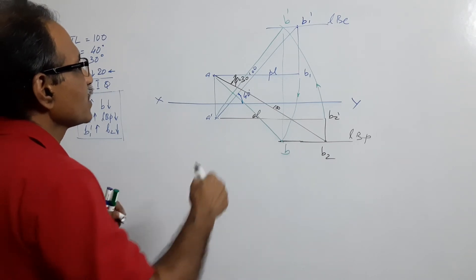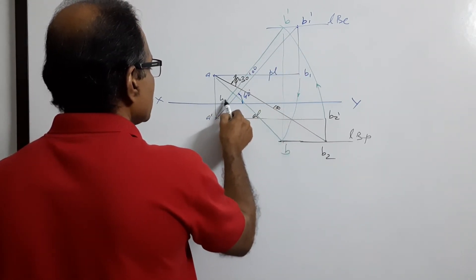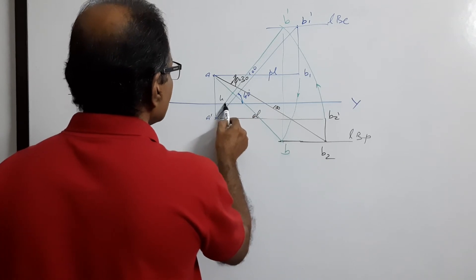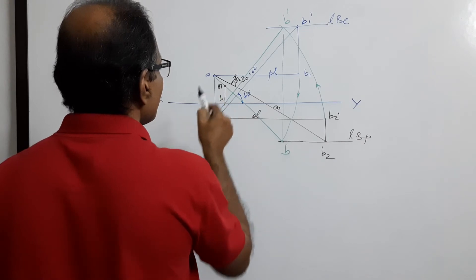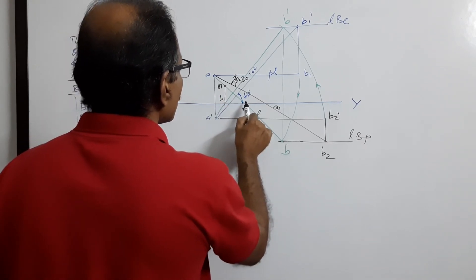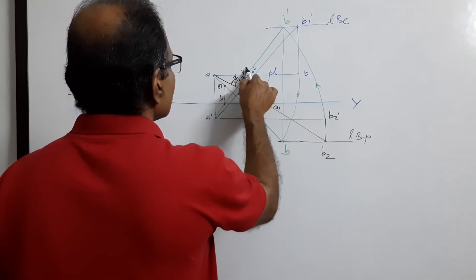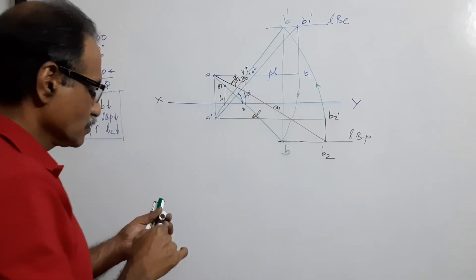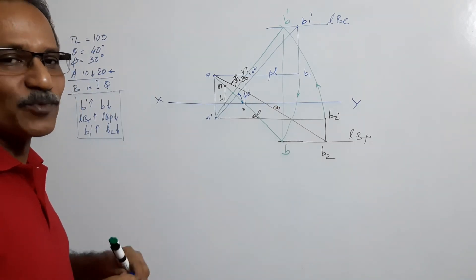Now you can find the traces. A dash B dash is the elevation. It cuts XY at H. Drop a vertical through H and it will cut the plan at HT. The plan cuts XY at V. Drop a vertical through V which cuts the elevation at VT. Now we need to add dimensions to the drawing.